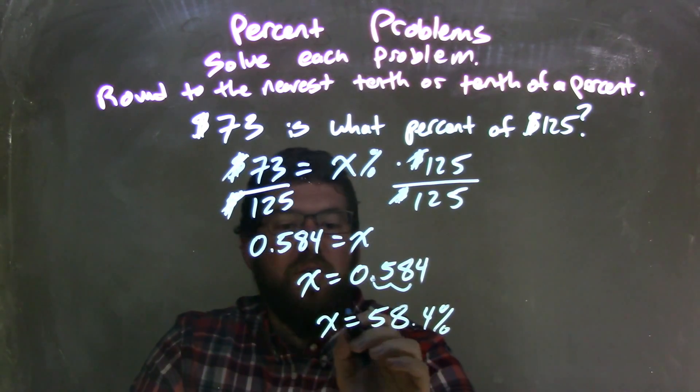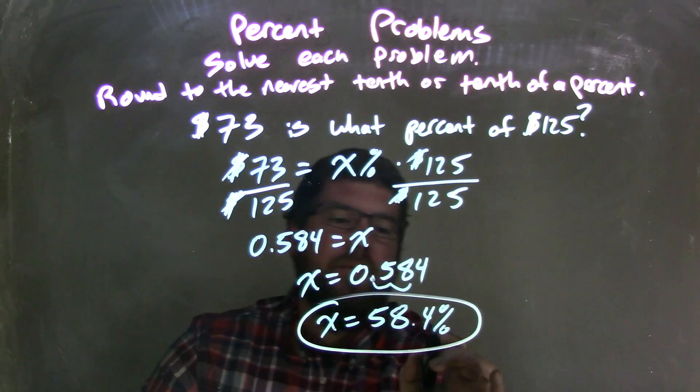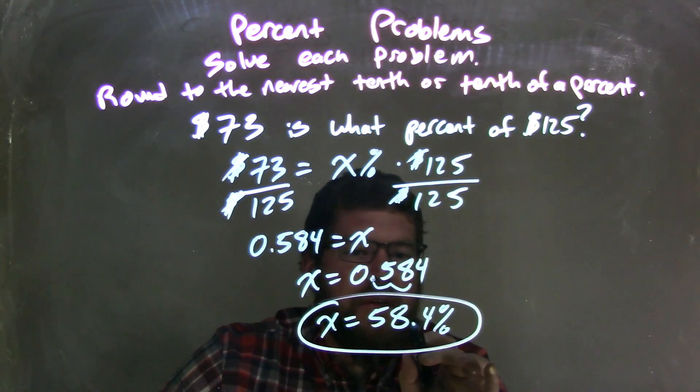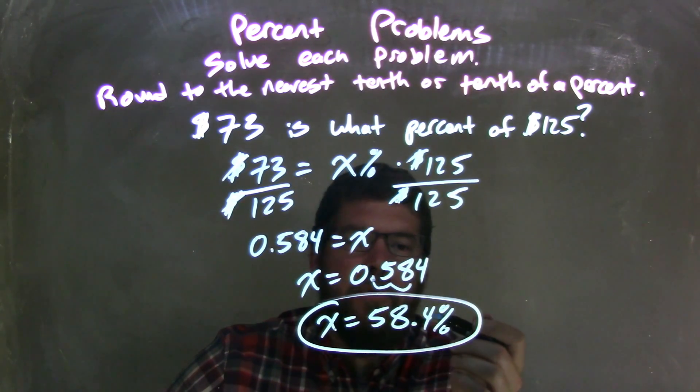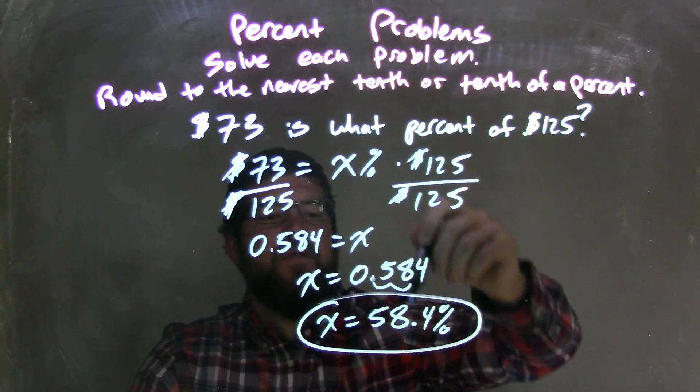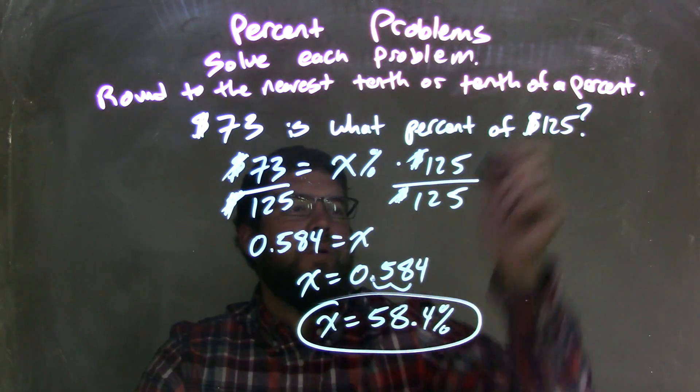And there we go. That's our final answer. We don't need to round. It's not even rounded at all, but we already have the tenths place there. There's nothing to the right. And so we have a final answer of 58.4 percent, which answers the question: $73 is 58.4 percent of $125.